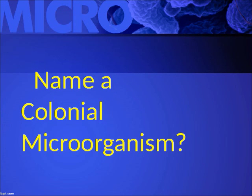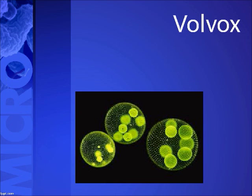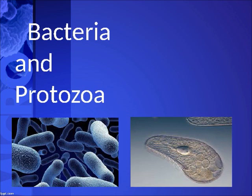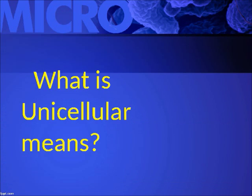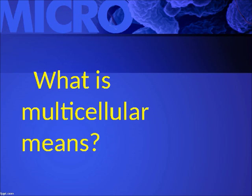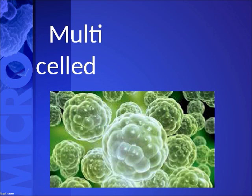Name a colonial micro-organism: Volvox. Which are only unicellular organisms? Bacteria and protozoa. What does unicellular mean? Single cell. What does multicellular mean? Multiple cells.